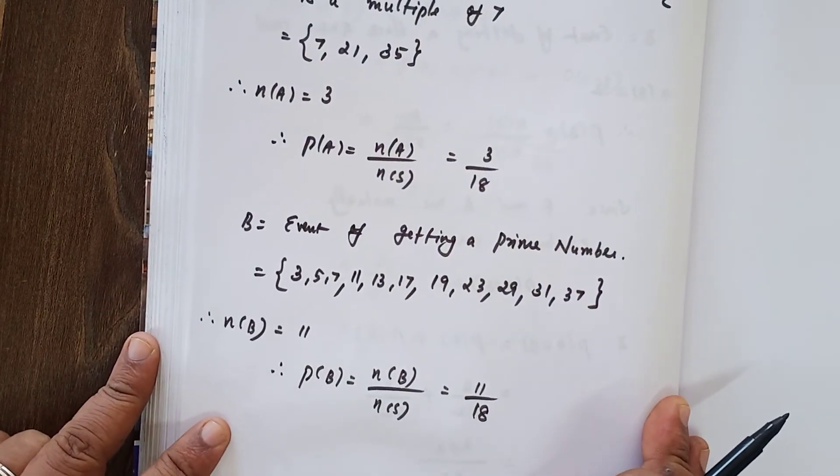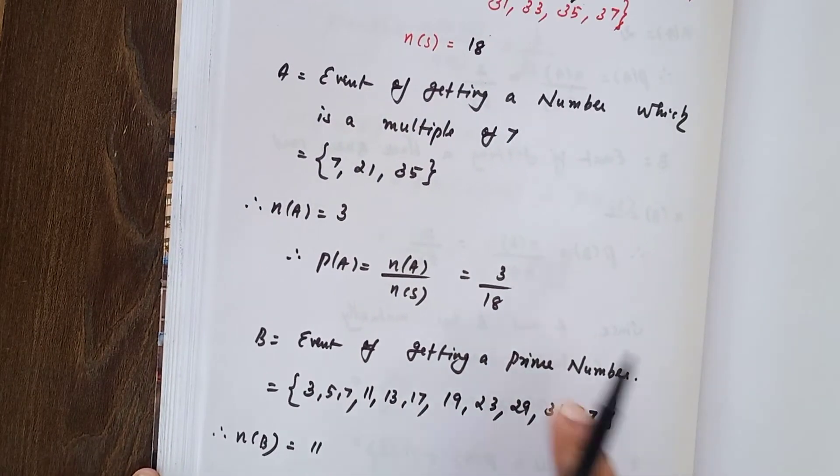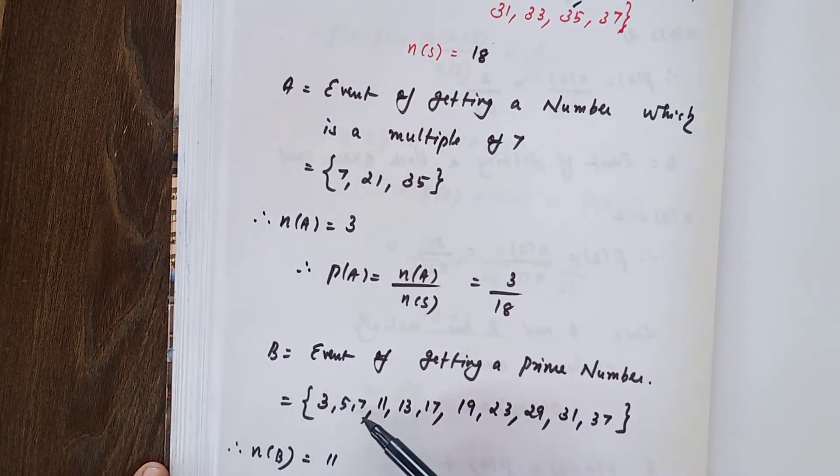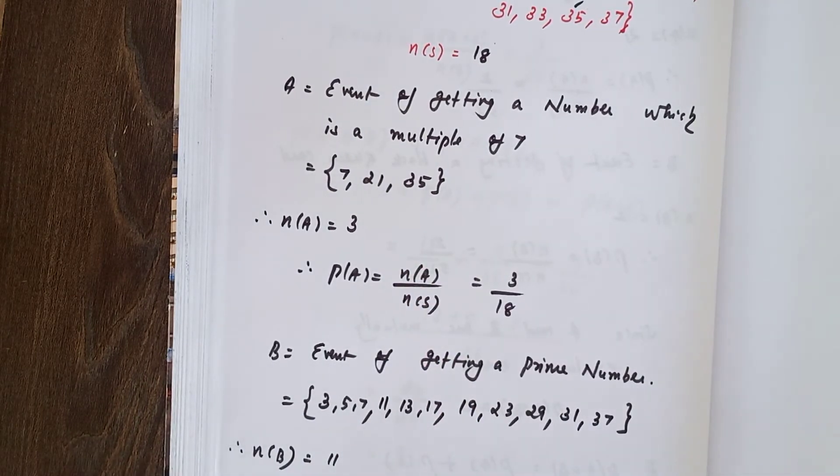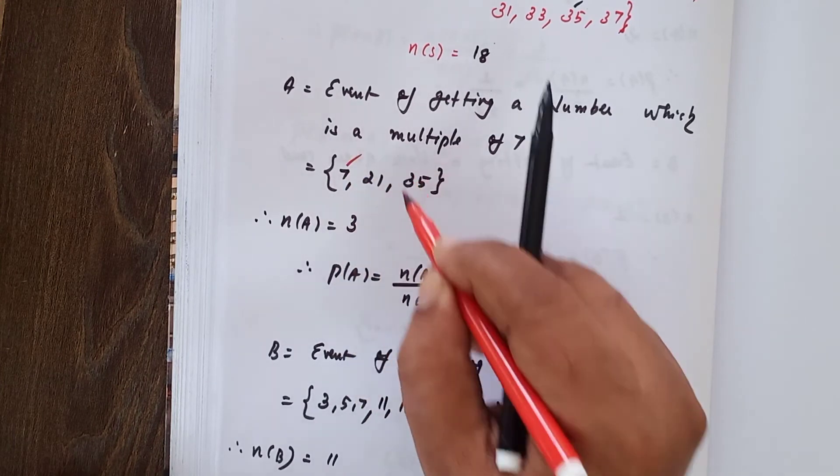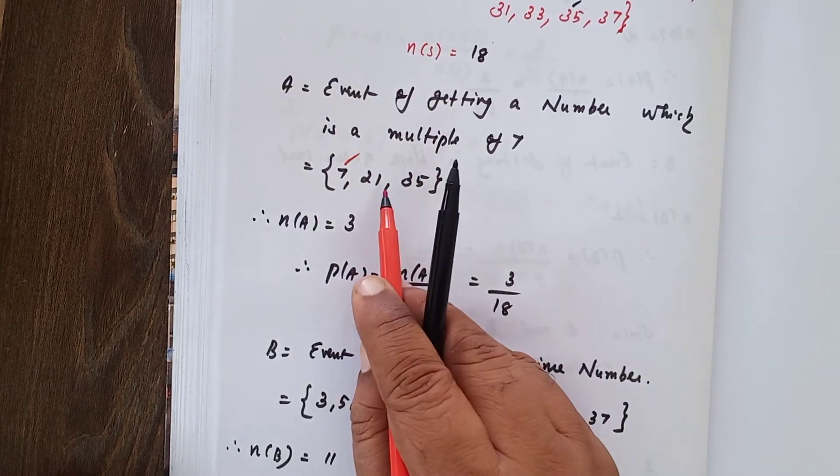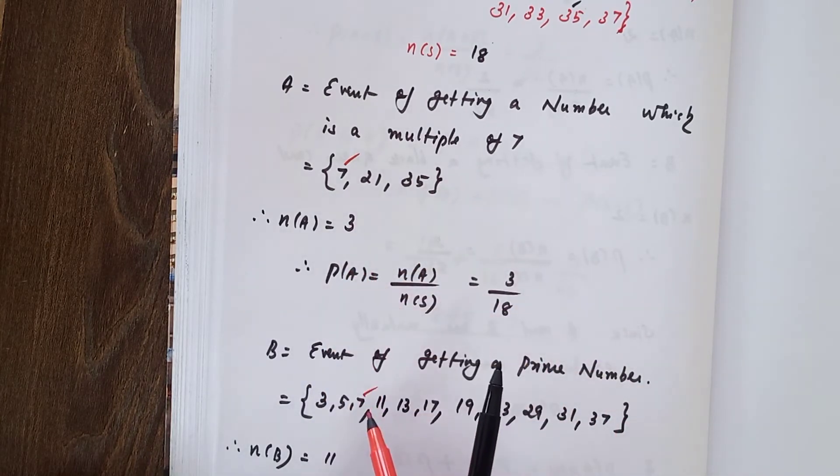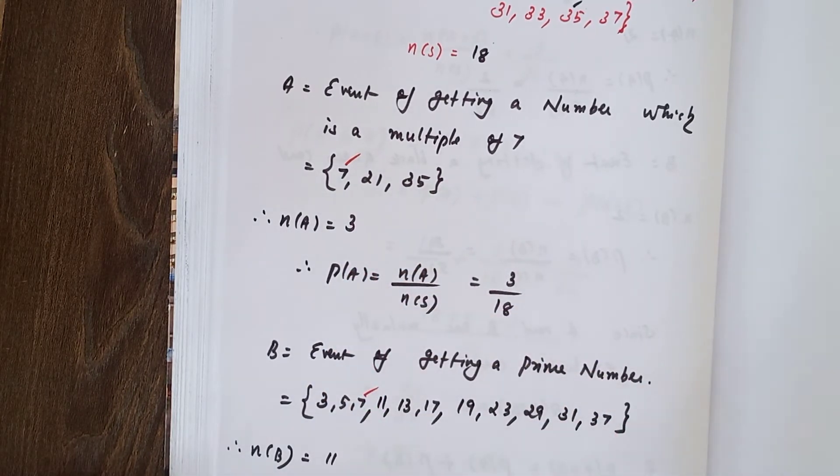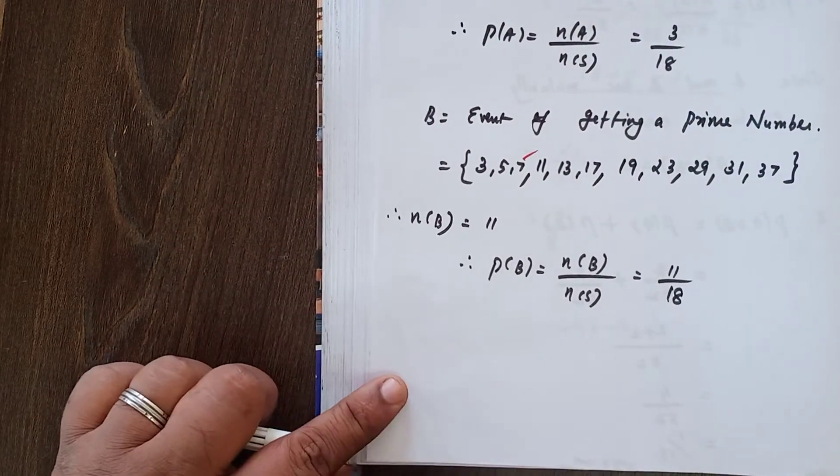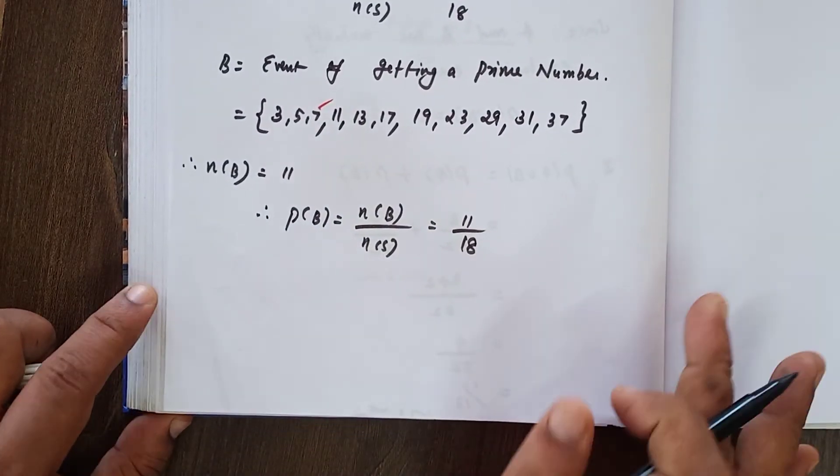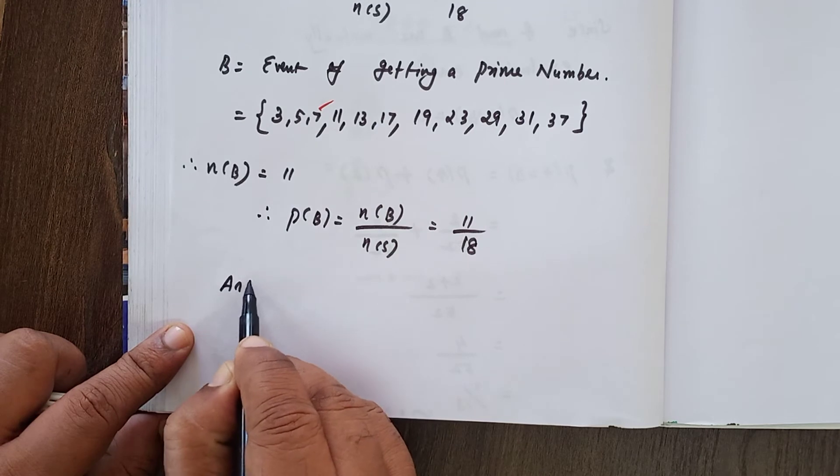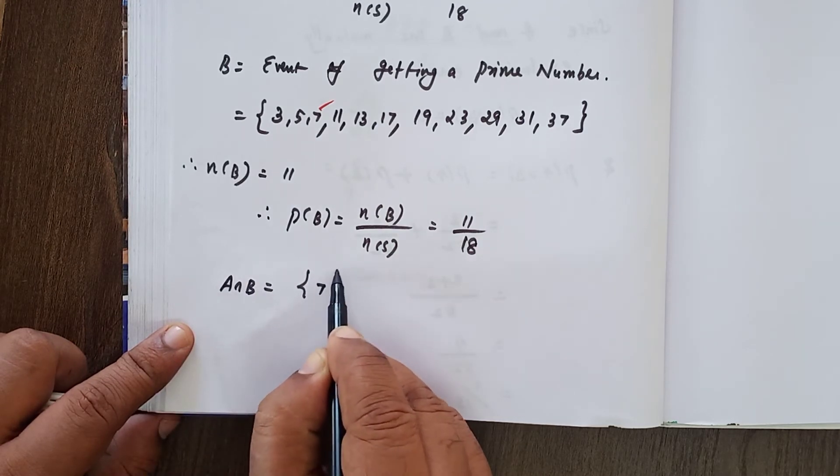Now we have to find the common elements between set A and set B. Here we have 7, here also we have 7, 7 common. Here we have 21, here no 21 at all. Here we have 35, here no 35 at all. So only one common number, what is the common number? 7. Here we have A intersection B that is equal to within set bracket write 7.